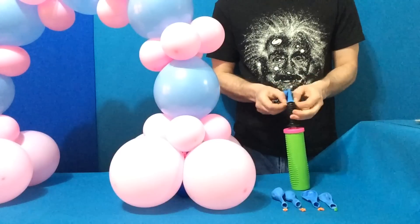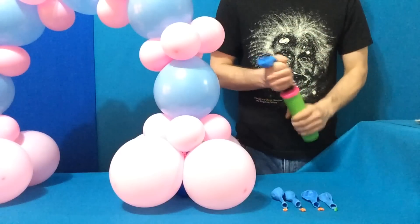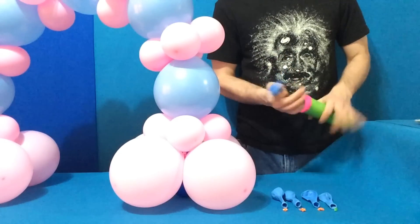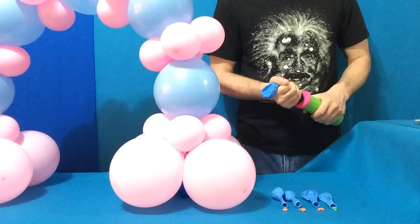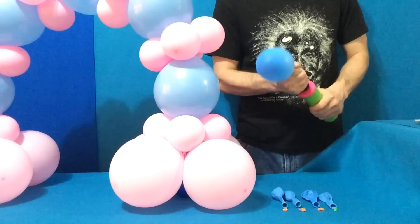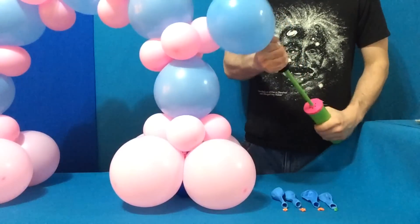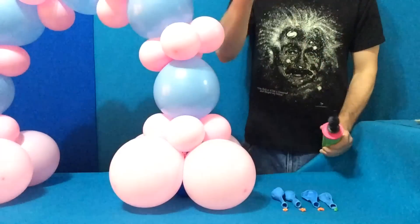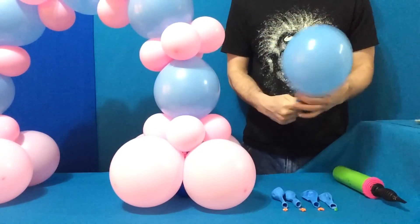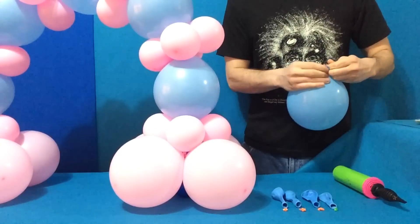Slip the nozzle over the pump with the knot trapped inside, and inflate each balloon equally six full pumps. One, two, three, four, five, six. Counting on the down stroke, removing, and tying.